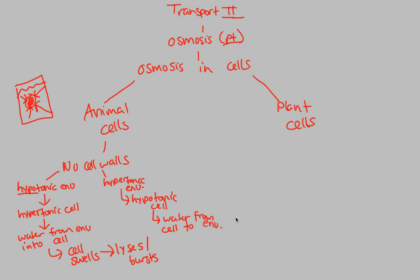Now we expect the opposite. The cell isn't going to swell — the cell is actually going to shrivel up, and because it shrivels up, it dies as well. Lysis or bursting means death. There's no fancy way of saying shriveled-up death. Both of these extreme situations call for extreme consequences because of the lack of cell walls.